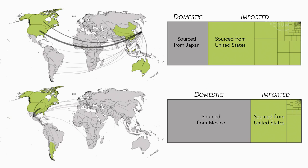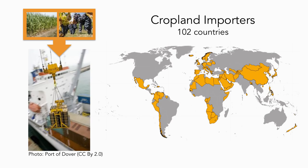Many other European countries have diverse food import networks like this, which offers access to a variety of foods not grown domestically. However, some countries have very concentrated food import networks. The total calorie supply of Japan and Mexico is tightly linked to U.S. crop production. This raises questions about how easily countries could adapt their food sourcing in the face of supply disruptions such as extreme weather.